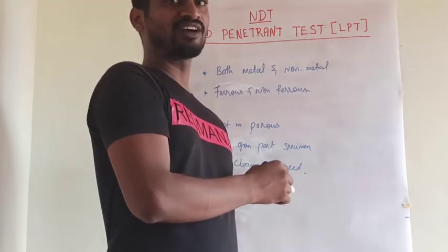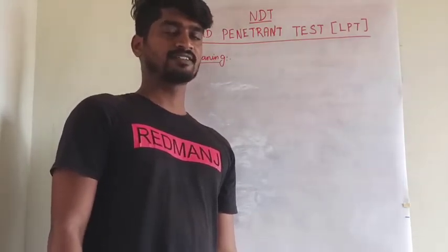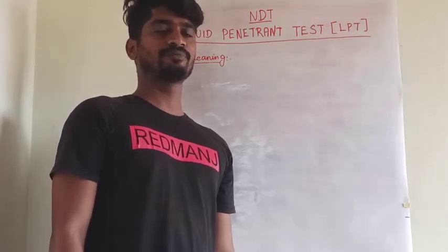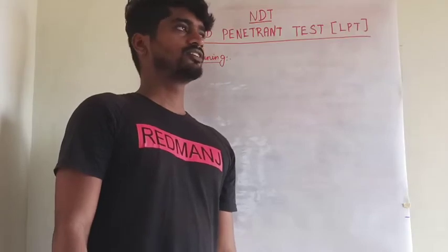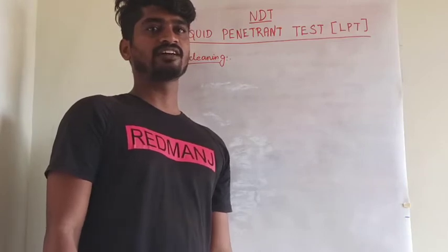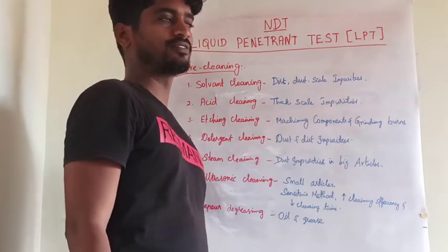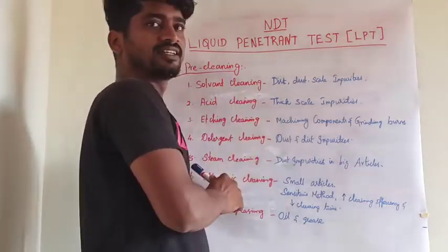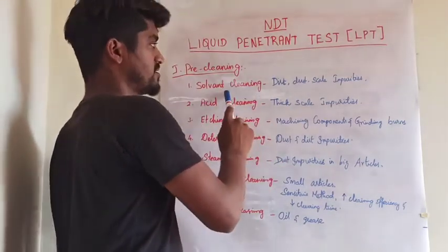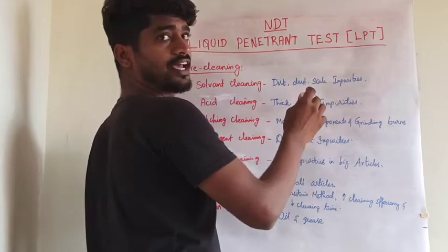Pre-cleaning is the first process of liquid penetrant test — it prepares the metal surface so that defects can be detected accurately. Depending on the cleaning process required, it may be classified into 7 types. The first is solvent cleaning, in which we remove dirt, dust, and scale impurities.